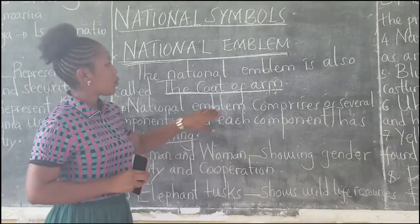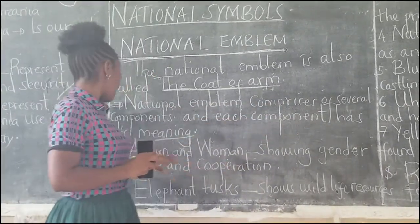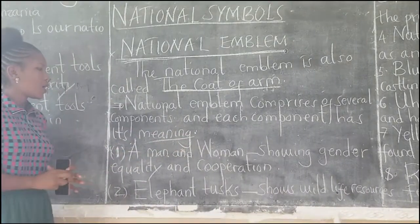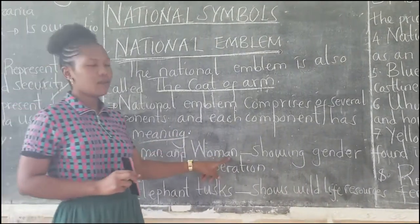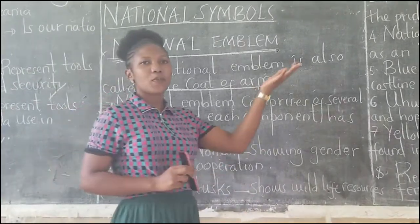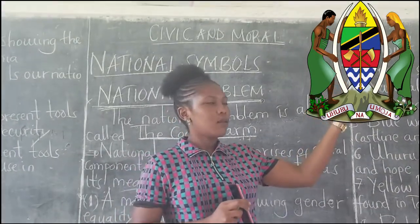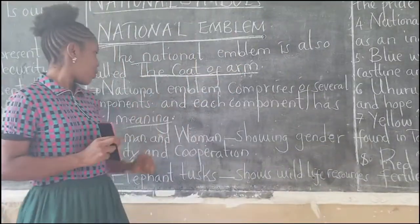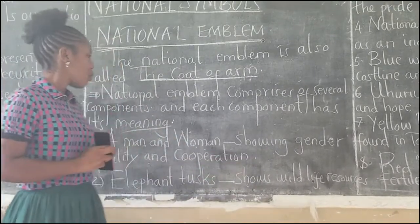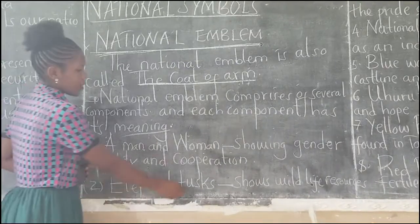The national emblem comprises several components, and each component has its own meaning. Component number one is a man and a woman. As you can see in this picture, there is a picture of a man and a woman. This represents gender equality and cooperation.